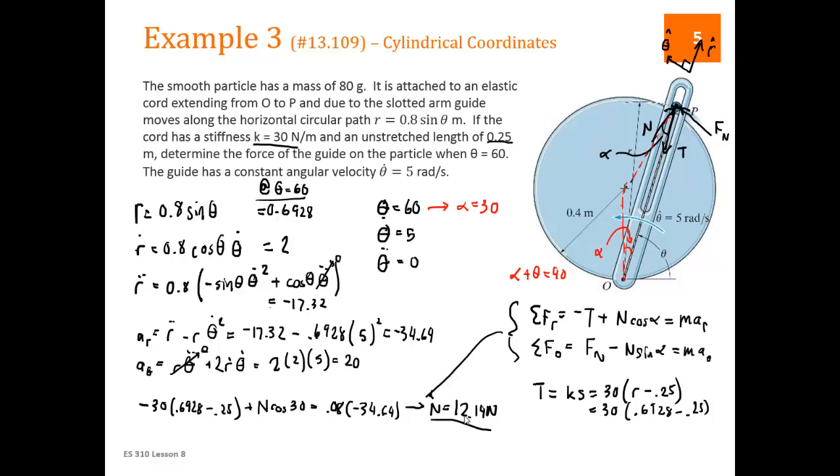The other part of our answer is the other equation. We've got FN, what we don't know, minus 12.14 times sine of 30, is equal to mass, 0.08, times A theta, which is 20. FN is the only unknown. Plug everything in. We get FN is equal to 7.67 Newtons, which is the other part of our answer.